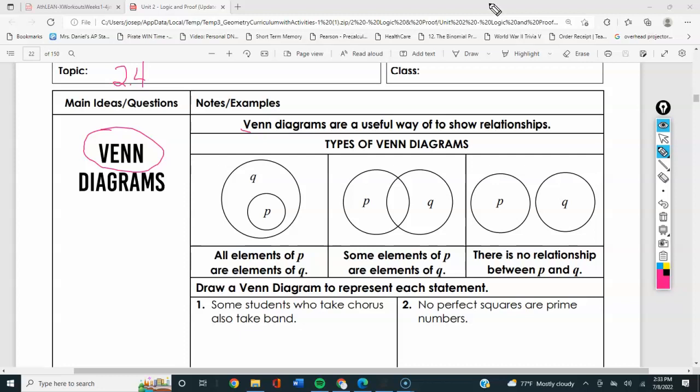Venn diagrams are a nice and useful tool to show relationships. You're going to use them a lot if you take statistics and if you look at a lot of graphs and charts.